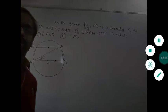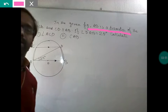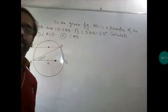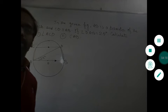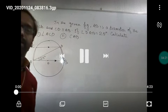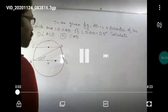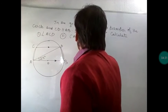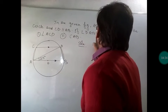Let me explain this question. It is given that AB is the diameter of the circle and CD is parallel to AB. Angle DAB — this angle — is given as 25 degrees. We have to find angle ACD and angle CAD. This is a conceptual question. The 25 degree angle is visible in the figure, and we are now going to start solving it. First, we need to find angle ACD.